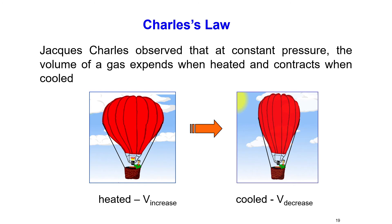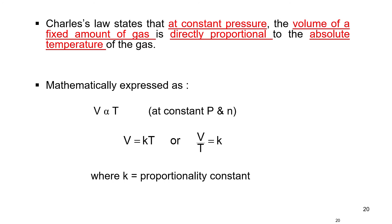Charles' Law: Jacques Charles observed that at constant pressure, the volume of a gas expands when heated and contracts when cooled. Charles' Law states that at constant pressure, the volume of a fixed amount of gas is directly proportional to its absolute temperature. Mathematically, V is directly proportional to T, so V = kT, or V/T = k, where k is the proportionality constant.